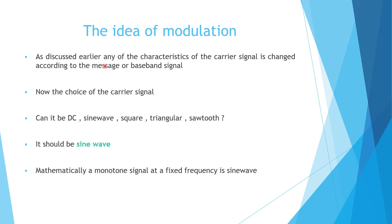The idea of modulation: any characteristic of the carrier signal is changed according to the message or baseband signal. For example, the amplitude of the carrier signal can be changed according to the baseband signal. The choice of carrier signal should be a sine wave — mathematically, a monotone signal at a fixed frequency is a sine wave. We will take cosine wave to represent it because of its phase. So the carrier signal c(t) = Ac·cos(θ), where amplitude is Ac, and θ = ωt = 2πfc·t + φ, with fc as frequency and φ as phase.